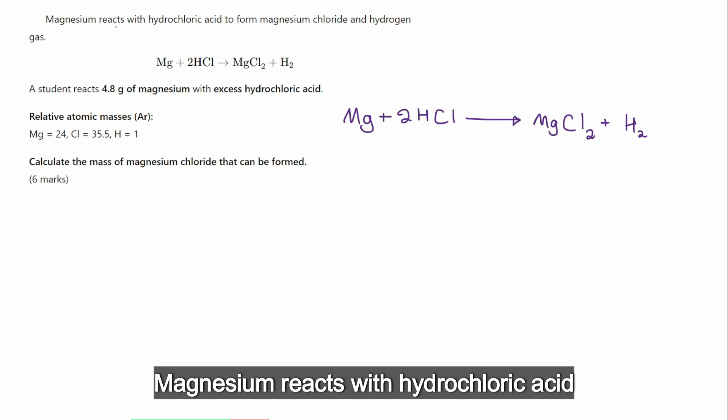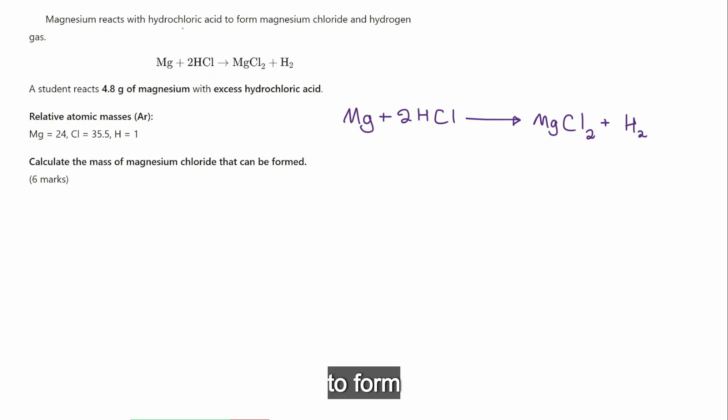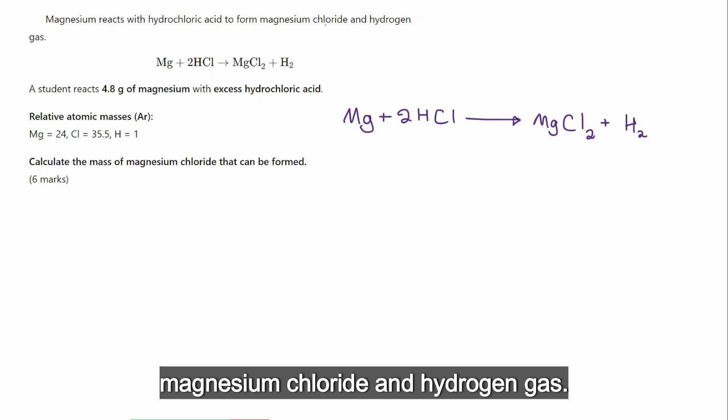Magnesium reacts with hydrochloric acid to form magnesium chloride and hydrogen gas. Yes, you can see that, and the equation has been balanced for you. You can clearly see: one magnesium, two hydrogens, two chlorines on each side. All good.